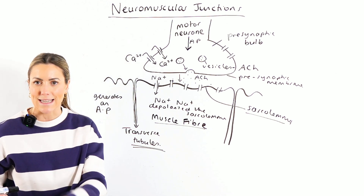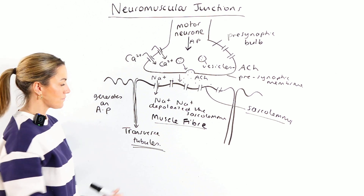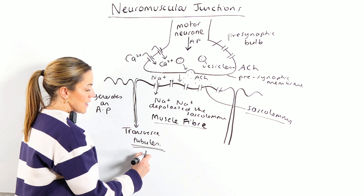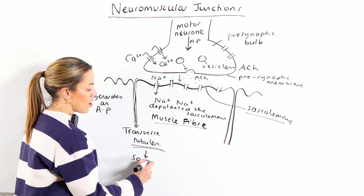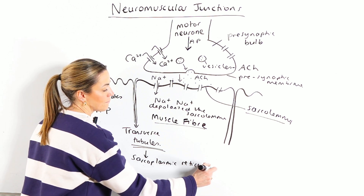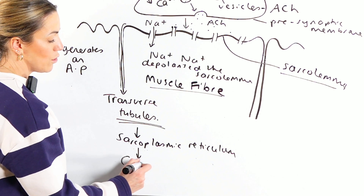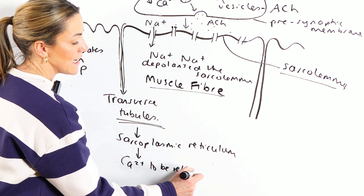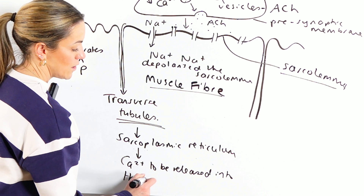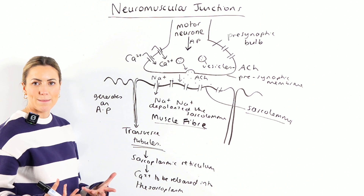Now let's extend this slightly to link it to sliding filament theory. Once the action potential travels down the transverse tubules, it's carried to the sarcoplasmic reticulum. When the action potential reaches the sarcoplasmic reticulum, it causes calcium ions to be released into the sarcoplasm — which is like the cytoplasm of the muscle fiber.